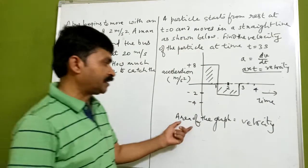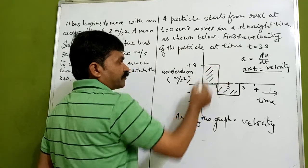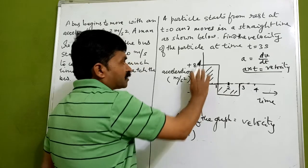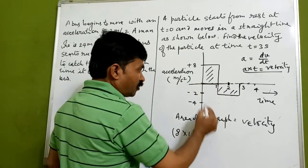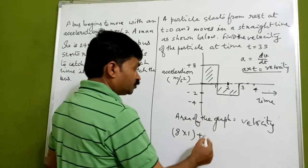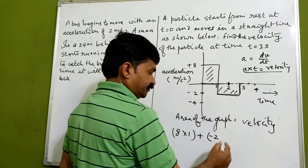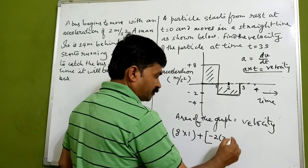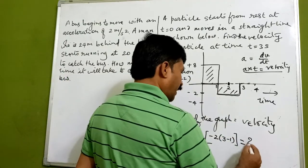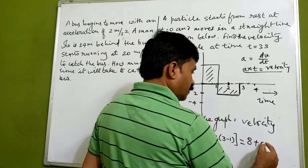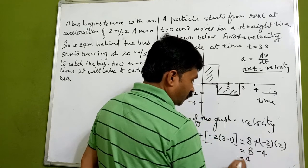Here we have an acceleration of 8 meter per second squared and time is 1 second. Then there is a negative portion: minus 2, and the time interval is from 1 to 3 seconds, so three minus one equals two. Multiplying minus 2 by 2 gives minus 4. So the total velocity is 8 plus minus 4, which equals 4 meter per second.